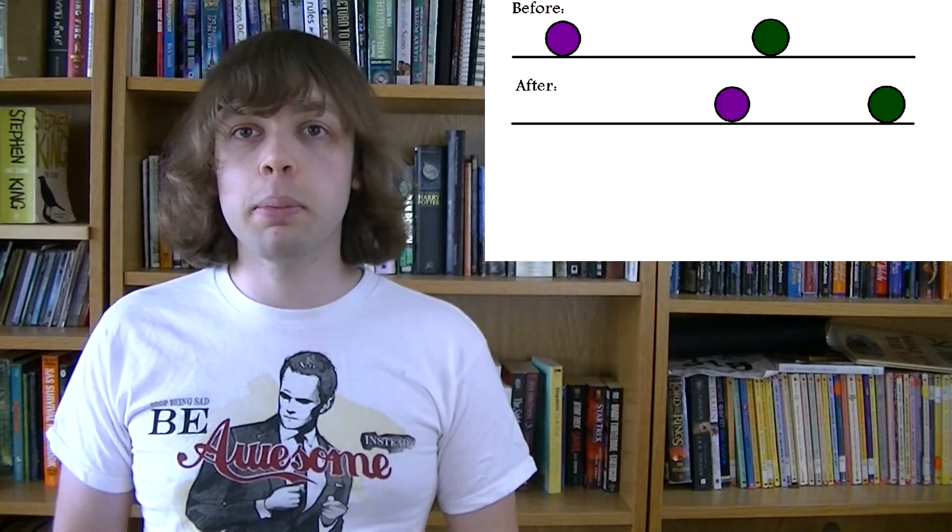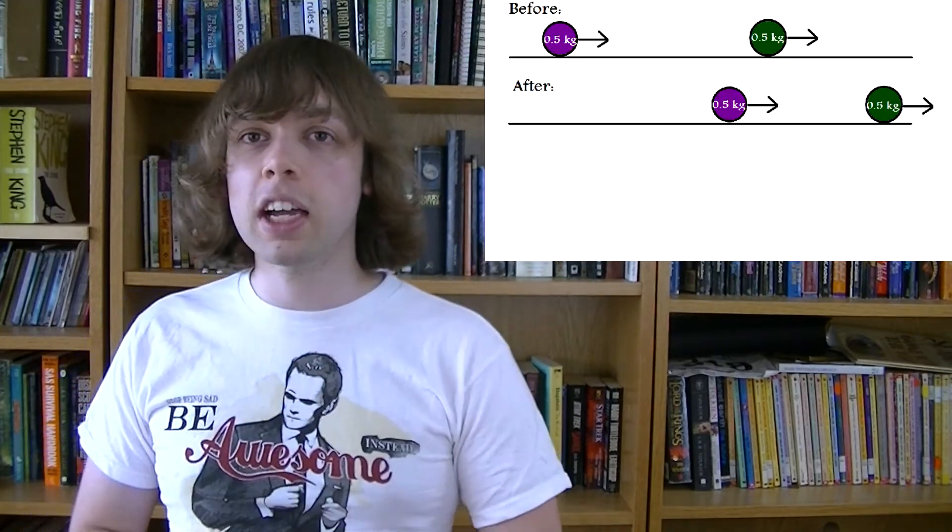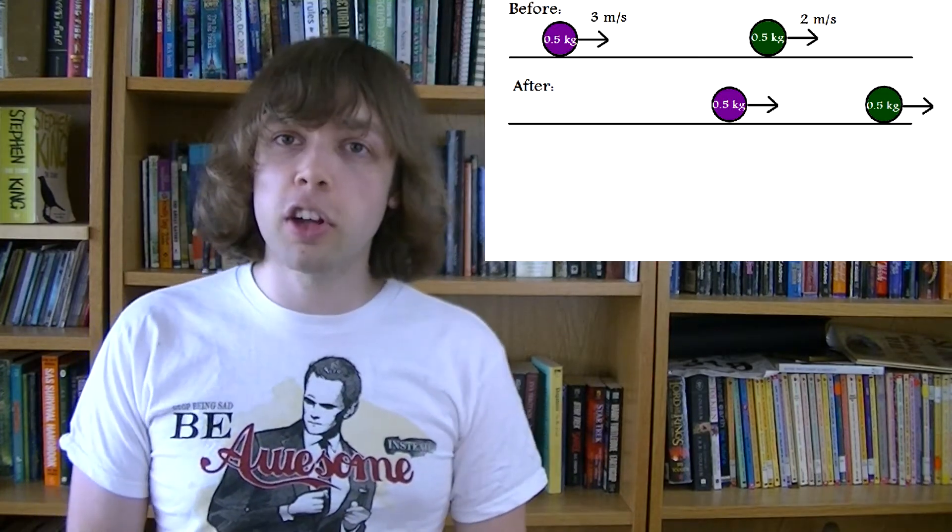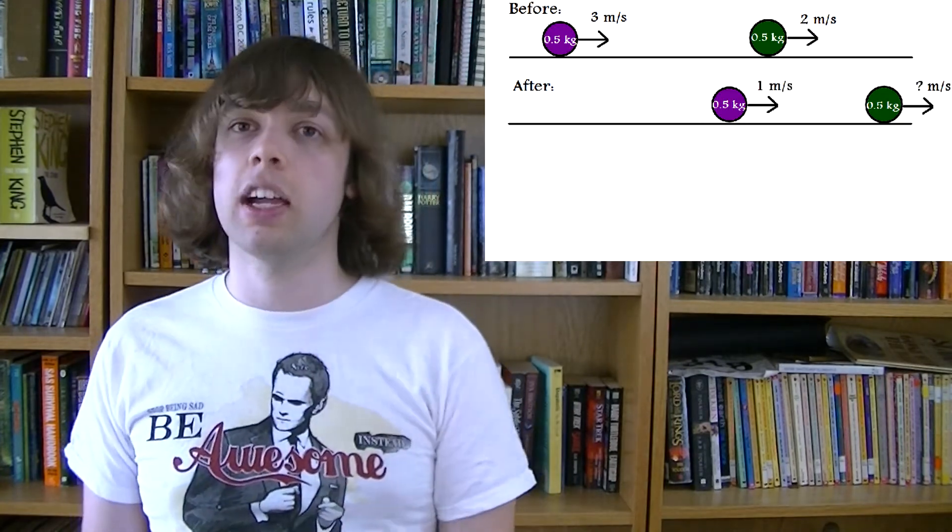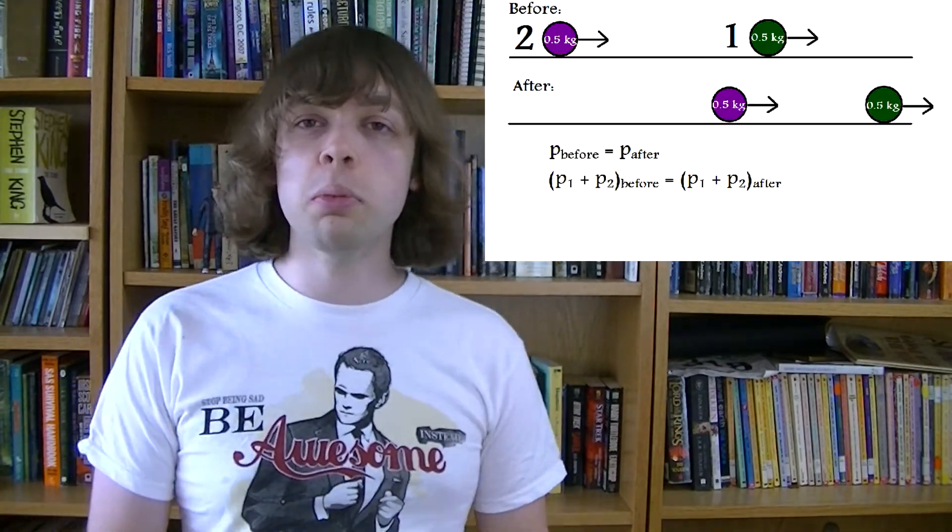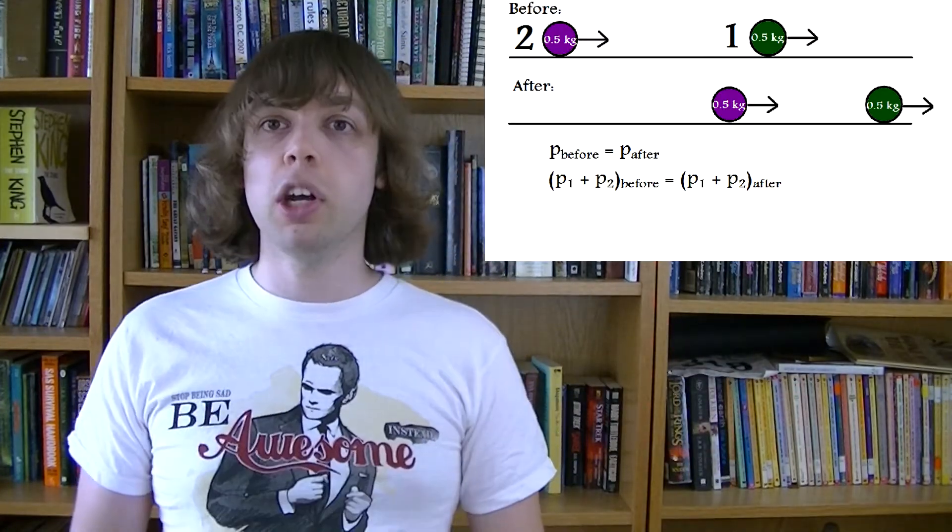So here's an example of a momentum calculation you might be asked to do. Two billiard balls weigh 0.5 kilograms each. The first ball is going at 2 meters per second, and the second ball is going at 3 meters per second. The second ball catches up with the first ball and hits it. After the collision the second ball is moving at just 1 meter per second. What is the velocity of the first ball after the collision?